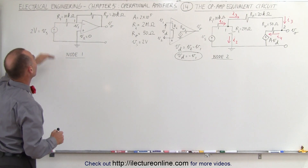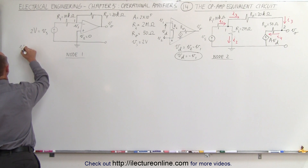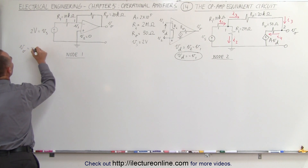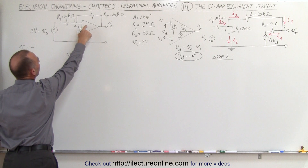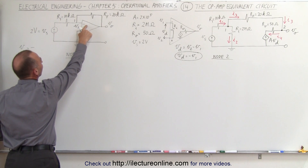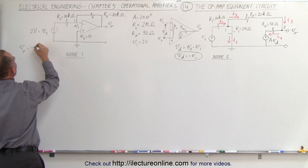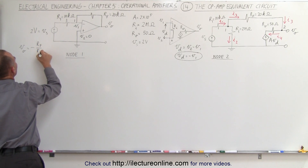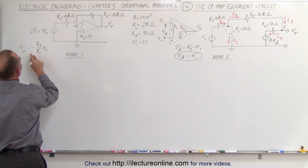For the ideal op-amp circuit, it's relatively easy. We can say that the output voltage V_O is equal to negative — because the source voltage is connected to the inverting terminal — so it's minus the feedback resistor divided by the input resistor, multiplied times the source voltage.